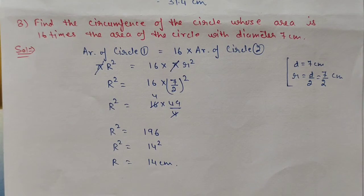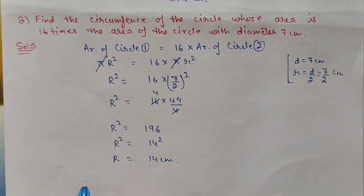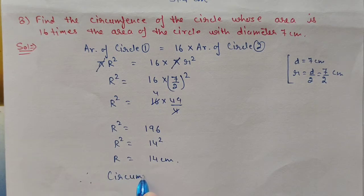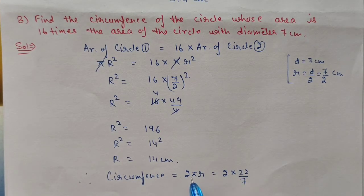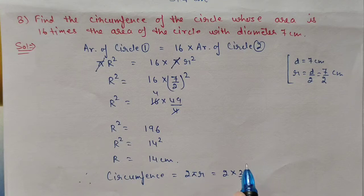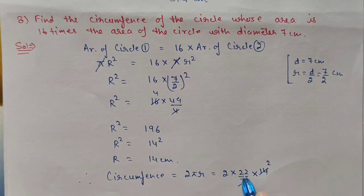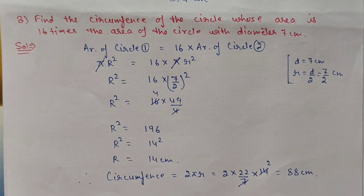Now we find circumference: 2 pi r equals 2 into 22 by 7 into 14. Cancel 7 — 2 into 22 into 2 equals 88 centimeter. Note: use pi as 22 by 7 by default unless 3.14 is specifically given.